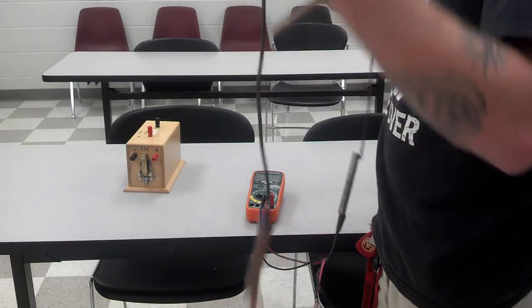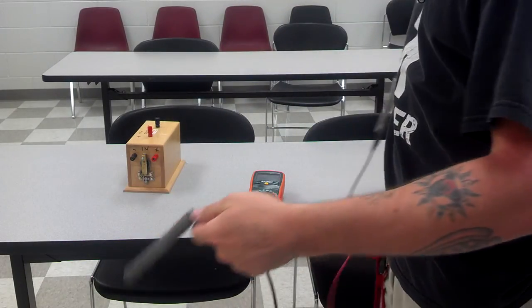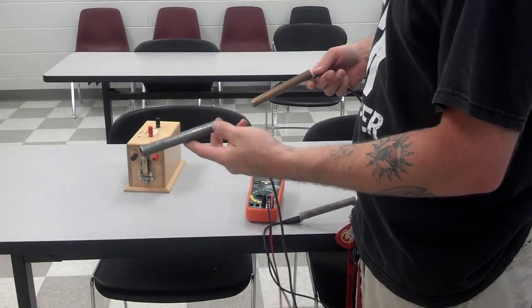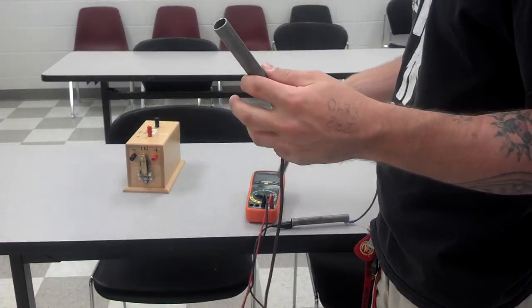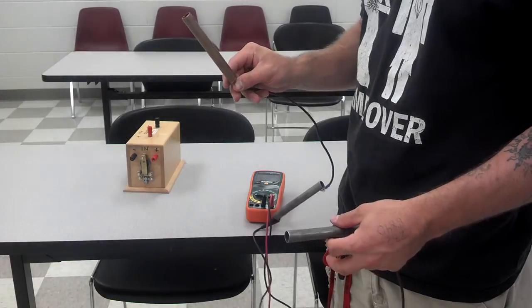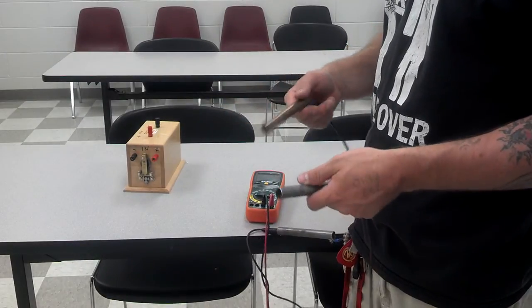So I've got basically an anode and a cathode. I have a steel rod connected to the voltmeter, and I have a copper rod connected to the voltmeter.